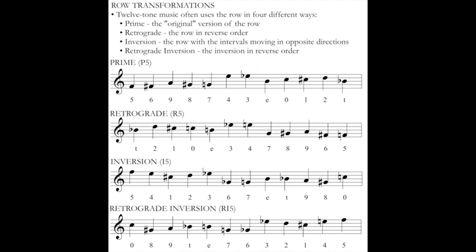The final row form is the retrograde inversion, which simply takes the inversion and moves it in reverse order. My I5 ends on C, G-sharp, A, B-flat. My RI5 — my retrograde inversion — begins with C, G-sharp, A, B-flat. These transformations might all appear in a particular piece of music, or only a small number of them might appear. They all sound somewhat different, but they're connected by having the same collection of intervals. The intervallic unity helps keep these row forms sounding similar, even though those intervals are manifested in slightly different ways — sometimes flipped in order, sometimes in direction, or sometimes both. These four row forms form the basis of a large majority of 12-tone music.